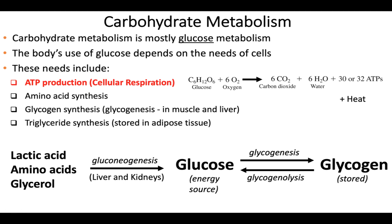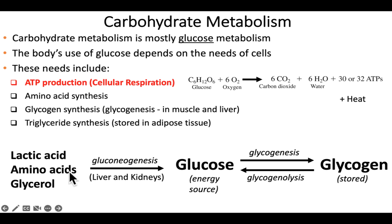We can also use glucose to form triglycerides and store that energy in adipose tissue. Notice that at the center is glucose. Glucose can be stored in the form of glycogen — that's glycogenesis. Then we can release that glucose by breaking down glycogen, which is called glycogenolysis. And then there's the concept that we can actually make glucose from non-carbohydrate molecules — lactic acid, amino acids, and glycerol can all be converted into glucose. That's called gluconeogenesis, and it can be done by your liver as well as your kidneys.